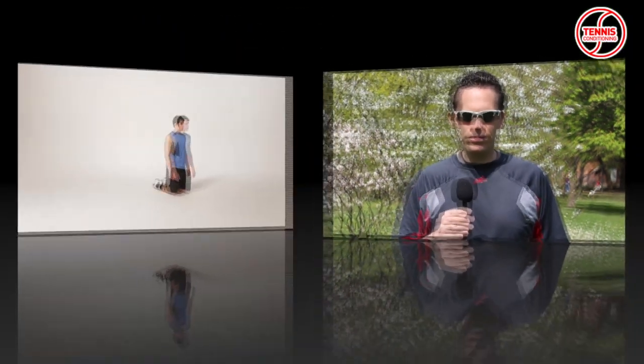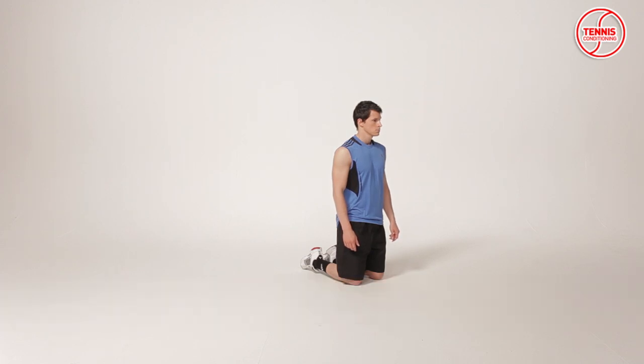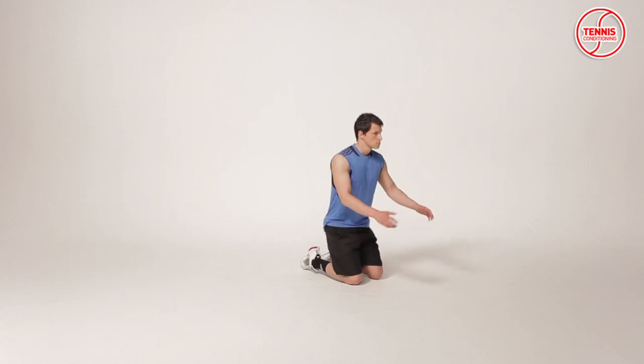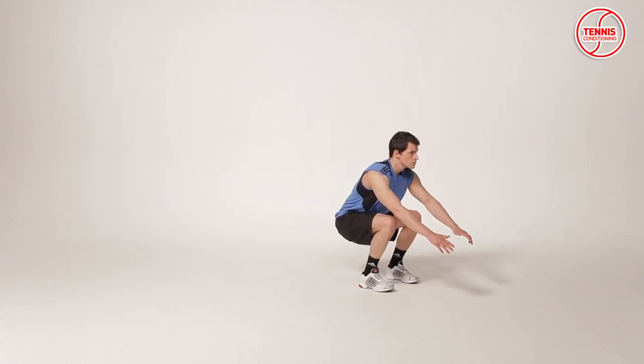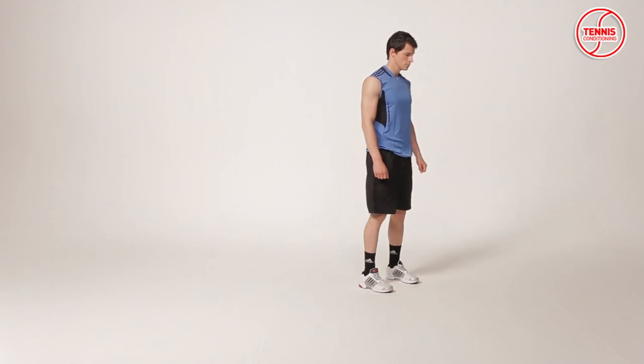Next, I want to introduce a simple performance test: the kneel and jump test, which you can conduct with your athletes. The kneel and jump test focuses on assessing hip flexor speed. Kneel on the ground with knees shoulder-width apart, use arm swings to create momentum, elevate yourself off the ground, jump, flex hips rapidly, and land on your feet in a squat position. More tests, including detailed descriptions, are presented in Chapter 4 of Advanced Concepts of Strength and Conditioning for Tennis.